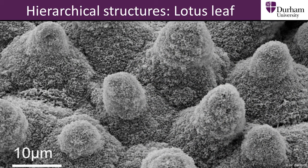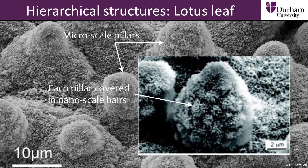An innovation in nature is the evolution of hierarchical structures. Such structures have multiple layers at different length scales. For example, a lotus leaf has both micro and nano scale structure, with micro scale pillars covered in nano scale hairs. The hierarchical structure provides two scales of roughness, increasing hydrophobicity and leading to the super hydrophobic effect we see with the leaves. Research has shown that surfaces combining micro pillars with nano fibers have a higher contact angle and lower contact angle hysteresis in water compared to equivalent surfaces with only micro pillars or nano fibers.